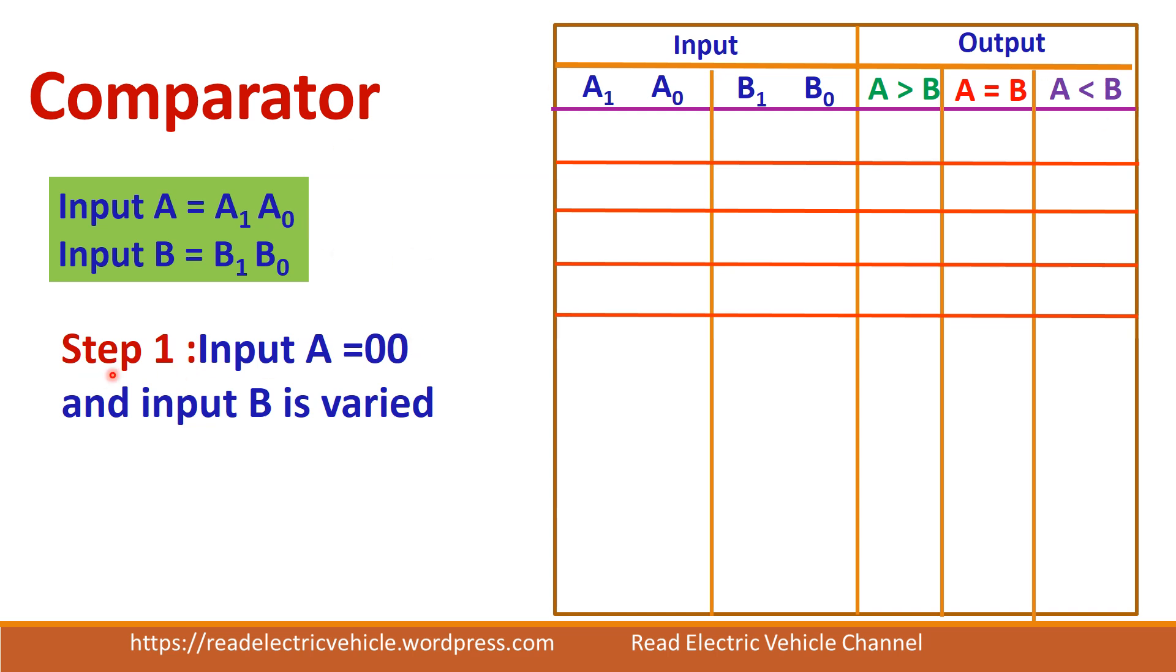First step, what we are doing is, A we are fixing it as 0 and B alone we are varying. So let us make A is equal to 0, 0. B is varied from 0, 0 to 1, 1. Because it is 2-bit variable, there will be 4 different combinations. You write all the different combinations.